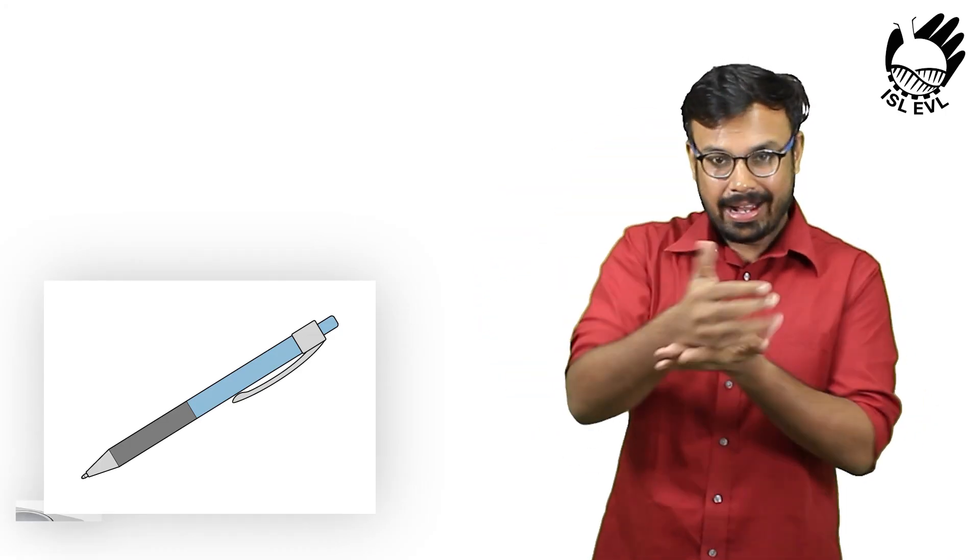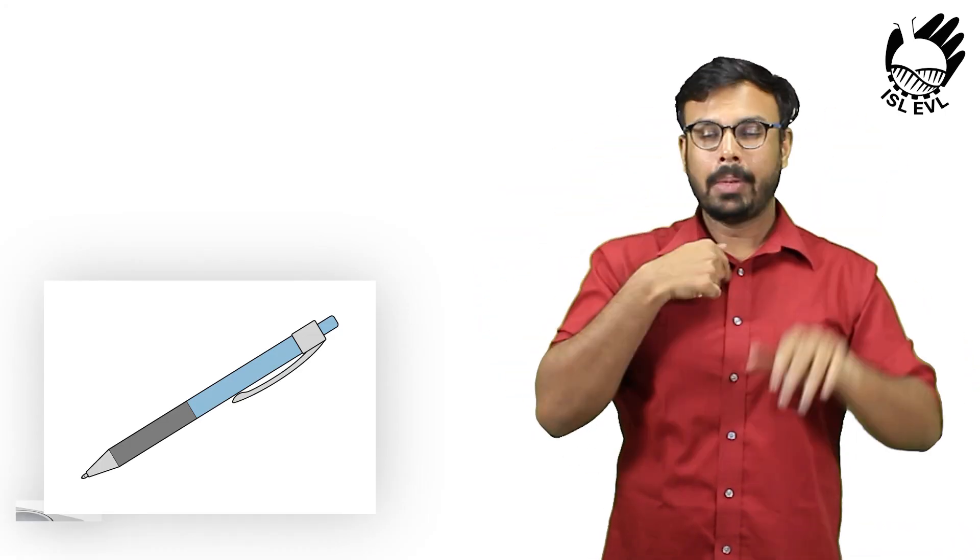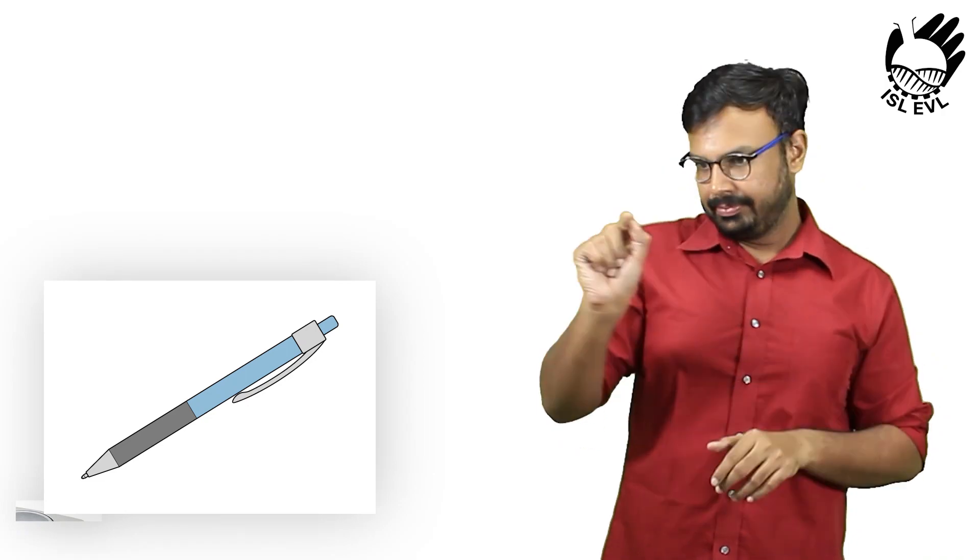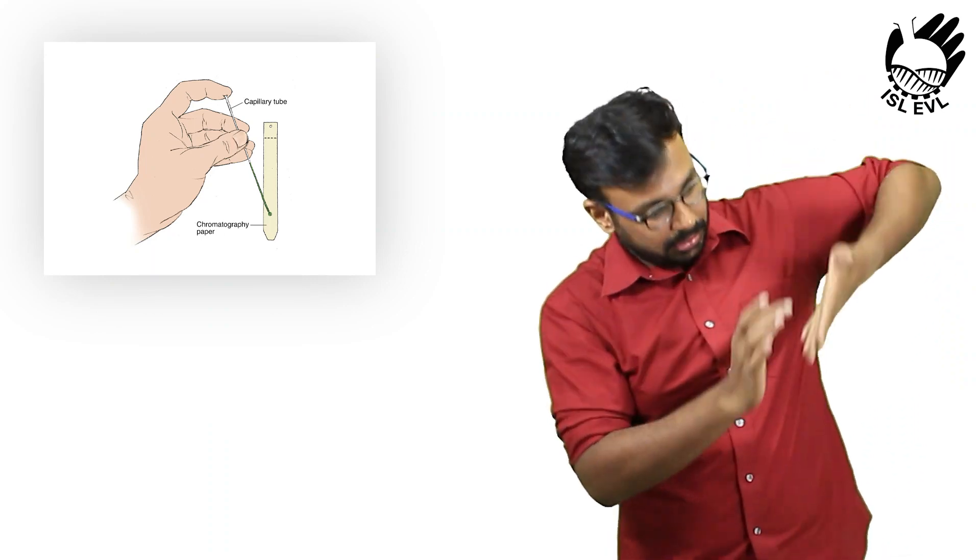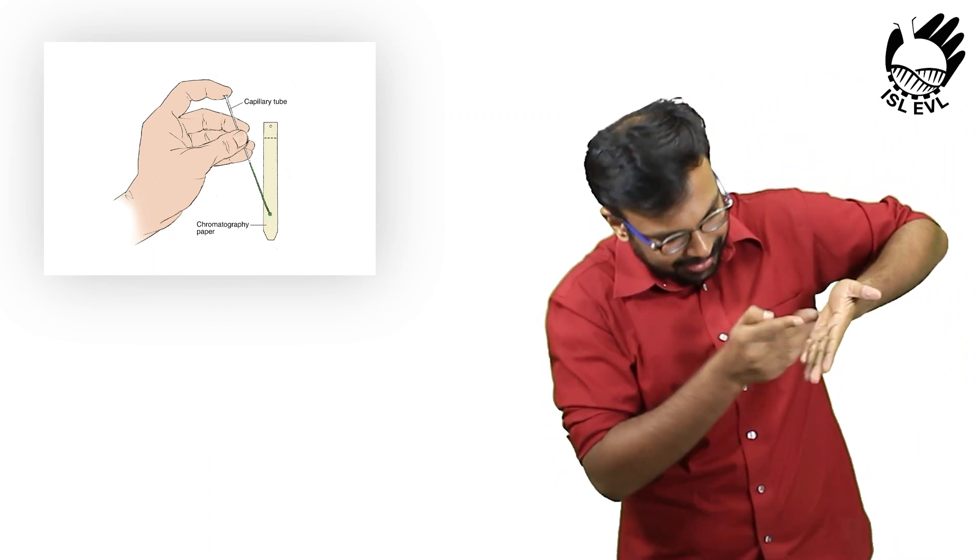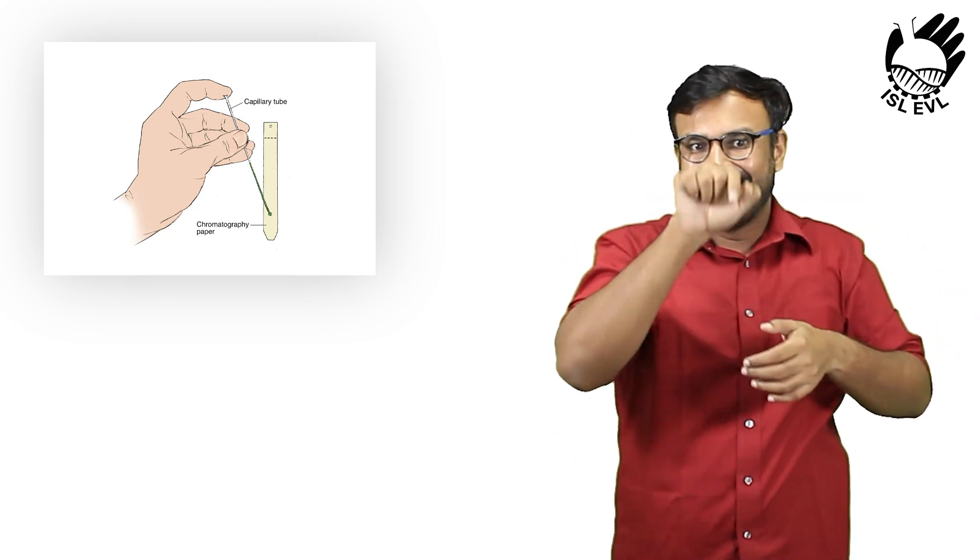Using a thin glass rod, dip the end of the rod into sample Y. Carefully dab the end of the rod onto the upper horizontal line that we have drawn. Make sure that the ink spot is not touching the edge of the paper.